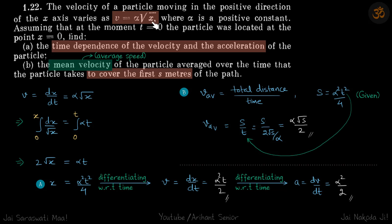Velocity is given as a function of x. We need to find velocity and acceleration as a function of time, then average speed and how much time it takes to cover the first s meters. So velocity as a function of x is given.